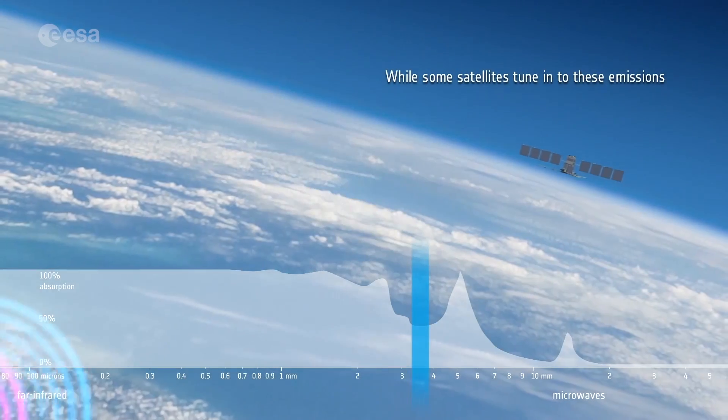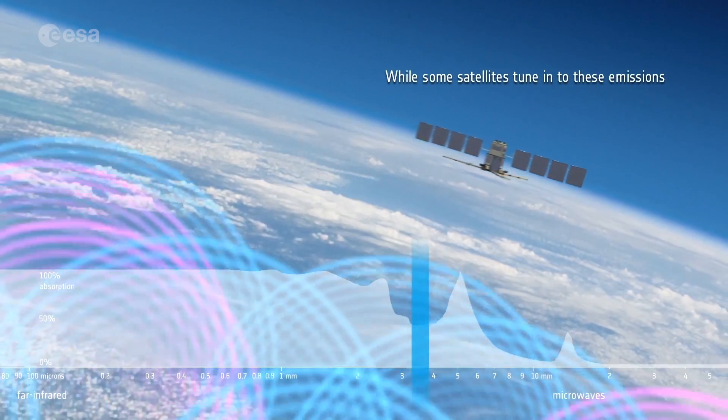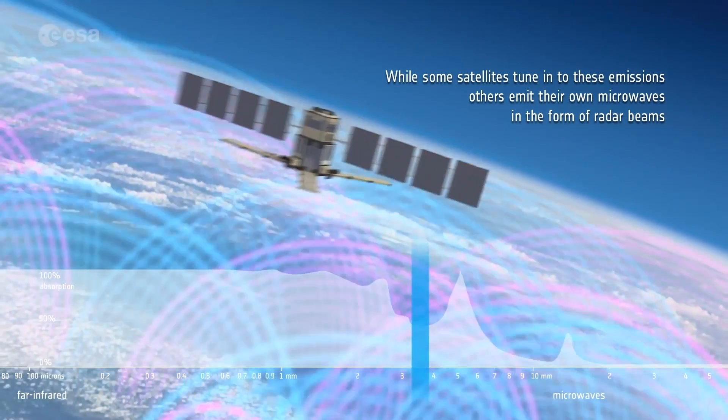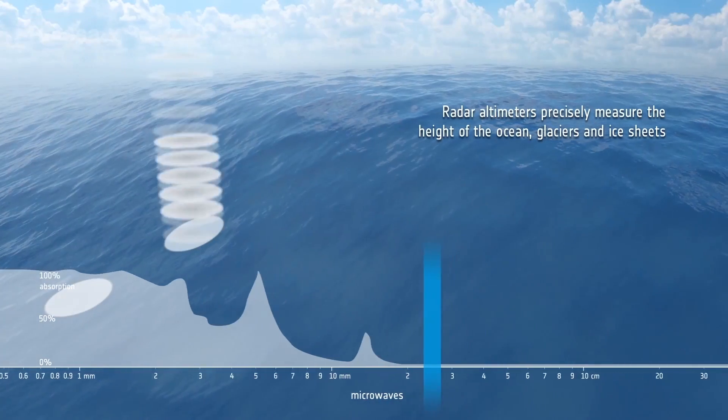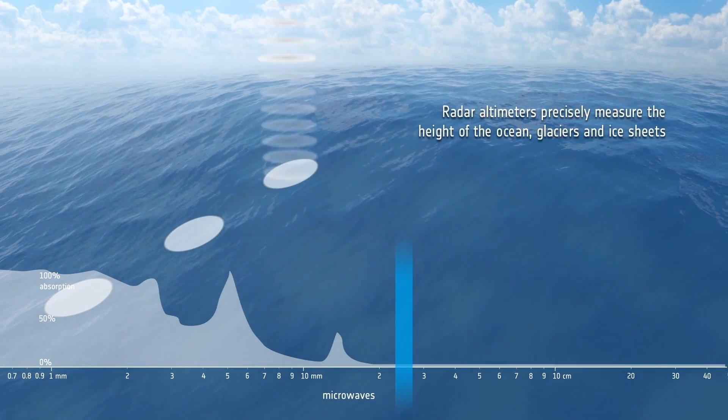While some satellites tune in to these emissions, others emit their own microwaves in the form of radar beams. Radar altimeters precisely measure the height of the ocean, glaciers and ice sheets.